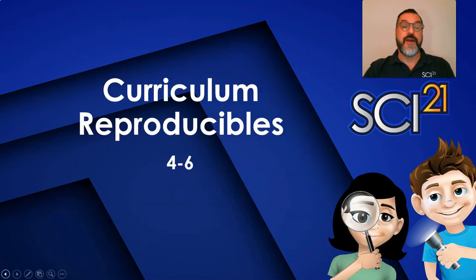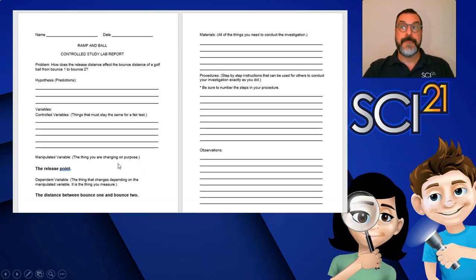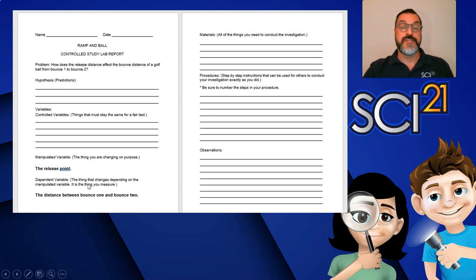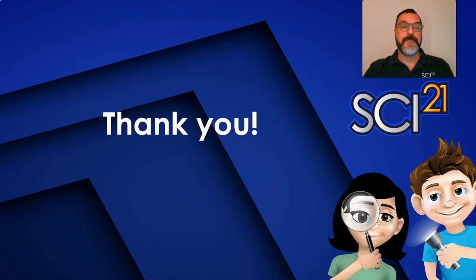Now let's take a look at the grades 4 through 6 pages. You can see this is a similar cover page and parent letter. These pages are now accessible in Word and can be uploaded to any electronic platform, converted to PDF, emailed home, printed, or shipped home. Here's another example of a new student page with purple color coding in the upper right-hand corner — this is a facilitator page to help work with the black box task. Thank you for your attention today and I hope this helps you continue to provide quality science teaching and learning in the upcoming school year.